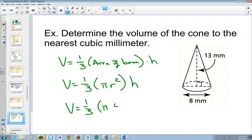The radius is four, so this will become four squared times the height, which is 13. And again, type this into your calculator all at once and see if you get the same answer that I get.